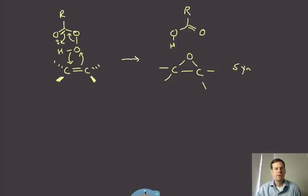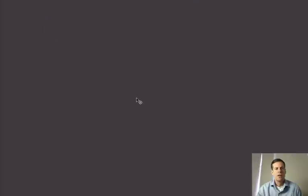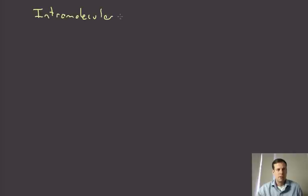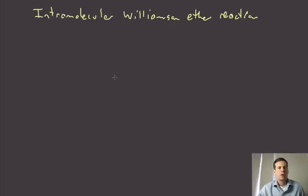So MCPBA very, very useful for forming epoxides. And there's another way we can form epoxides, which basically amounts to an intramolecular Williamson ether formation, Williamson ether reaction. So remember this is where we're going to form an alkoxide and it'll do an SN2 reaction on an alkyl halide.